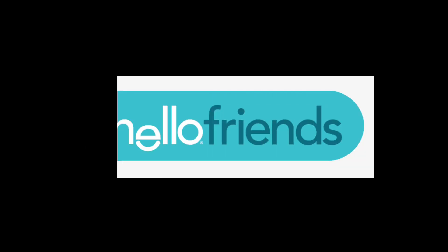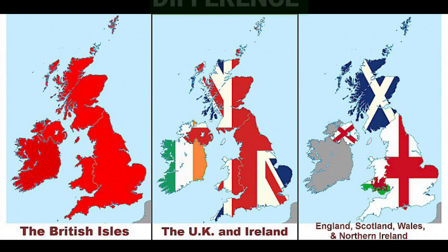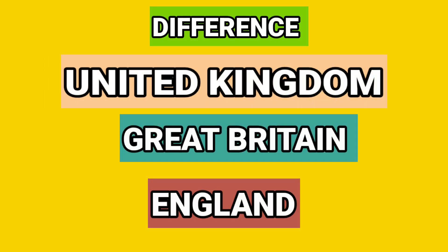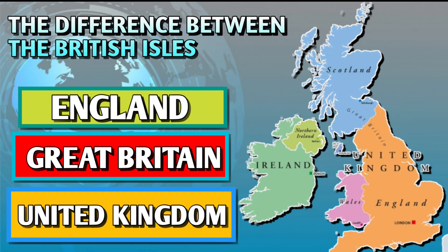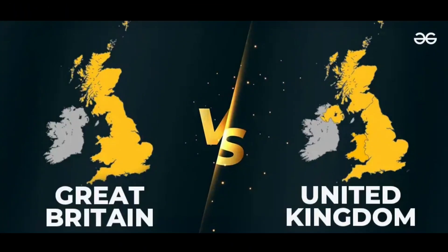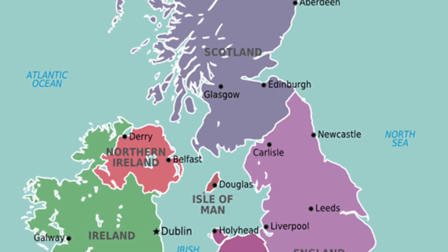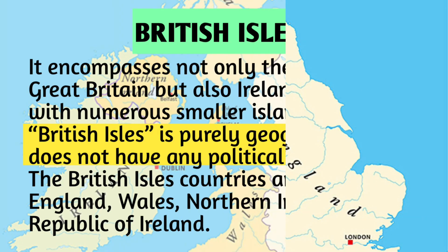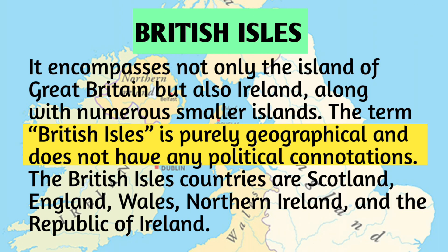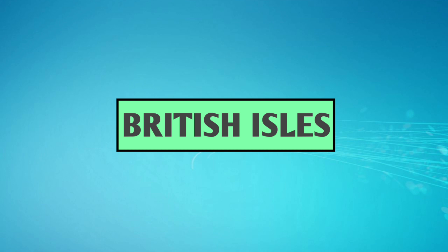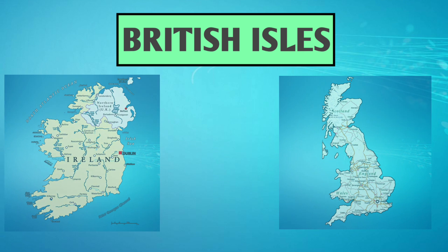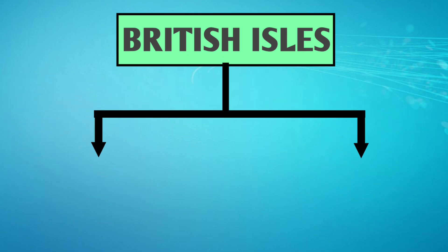Hello friends, today in this video we shall know about the difference between United Kingdom, Great Britain, and England. But before that, let us first know about the British Isles. The term British Isles is purely geographical and doesn't have any political connotations. It mainly consists of two main islands and numerous smaller islands.